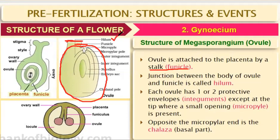Hilum is a very important point to remember — it is where the ovule is attached to the placenta. The ovule has coverings called integuments. The ovule stalk is called funicle, and at the point where the funicle is attached to the placenta, it is called hilum. The ovule coverings are called integuments.